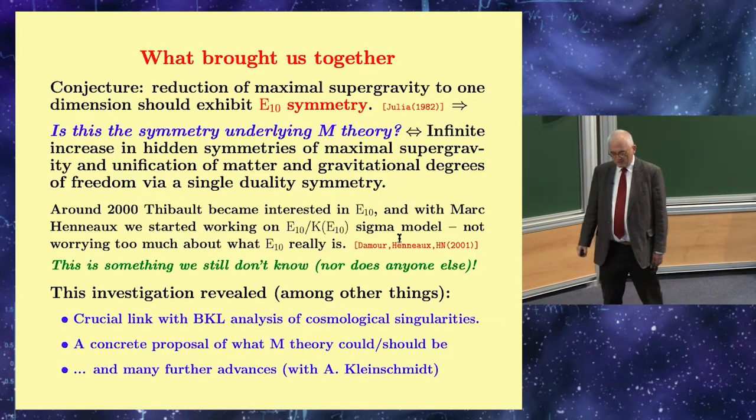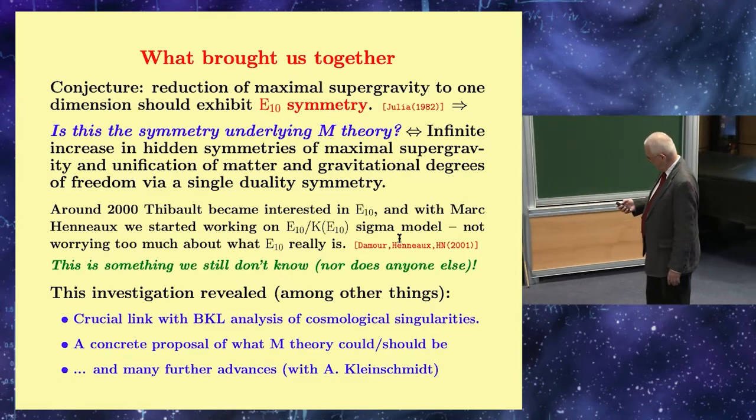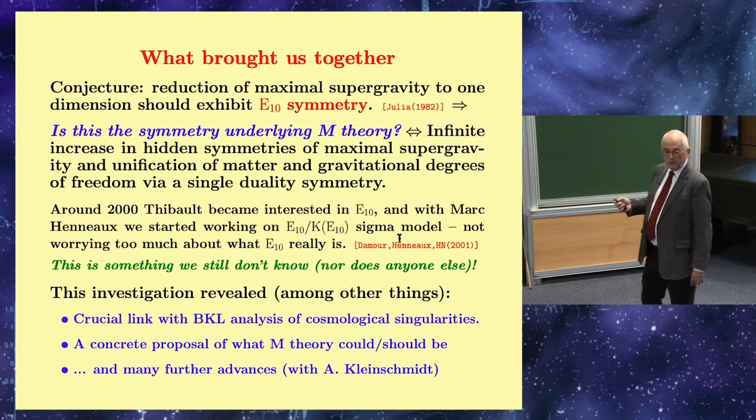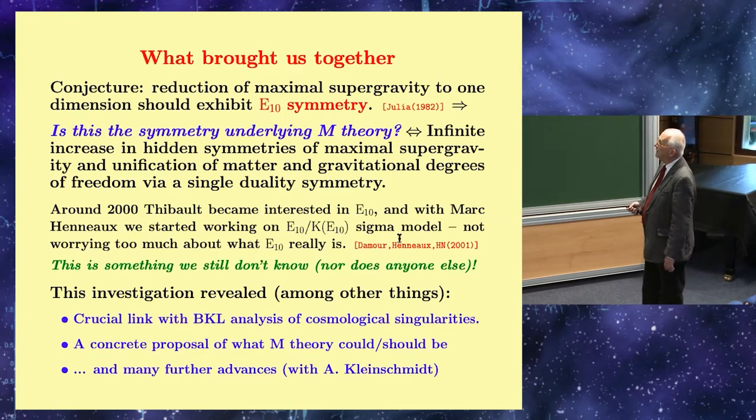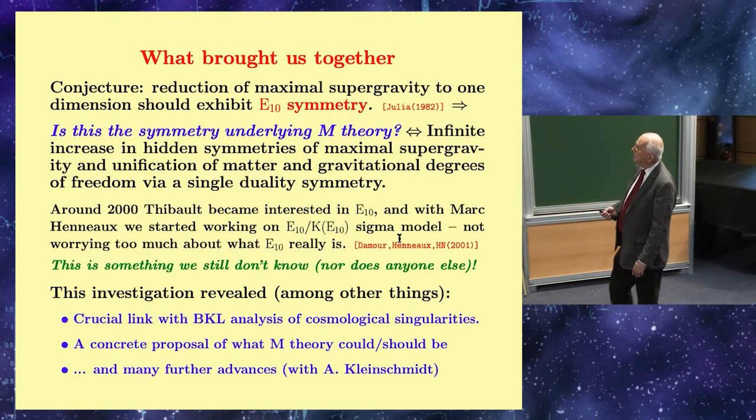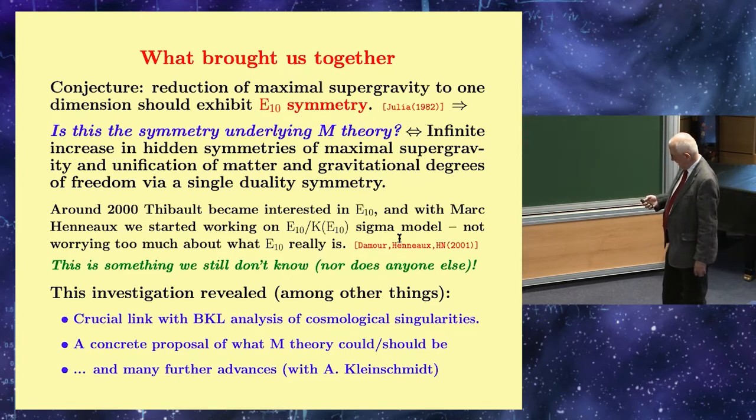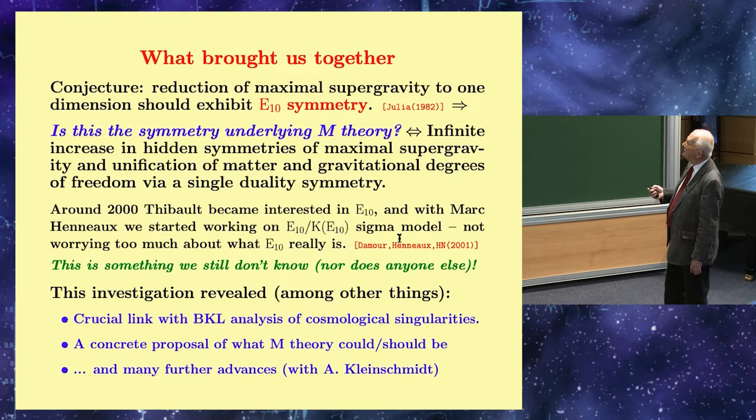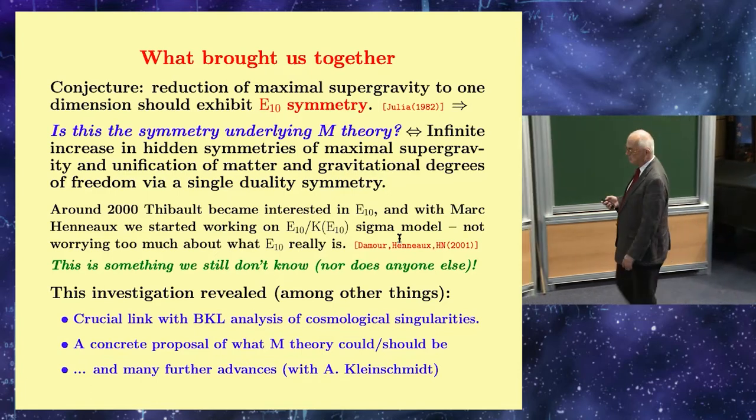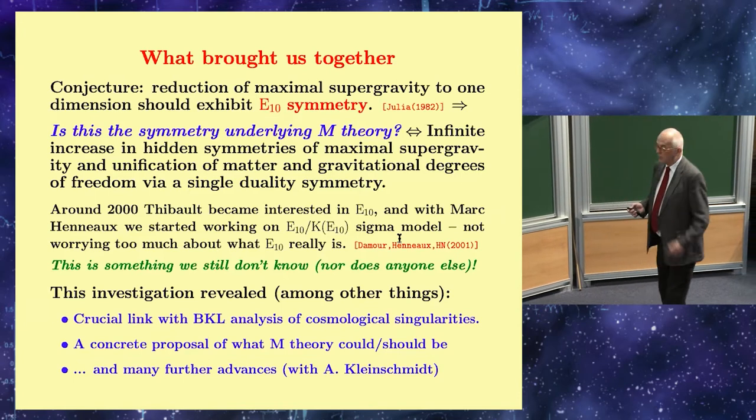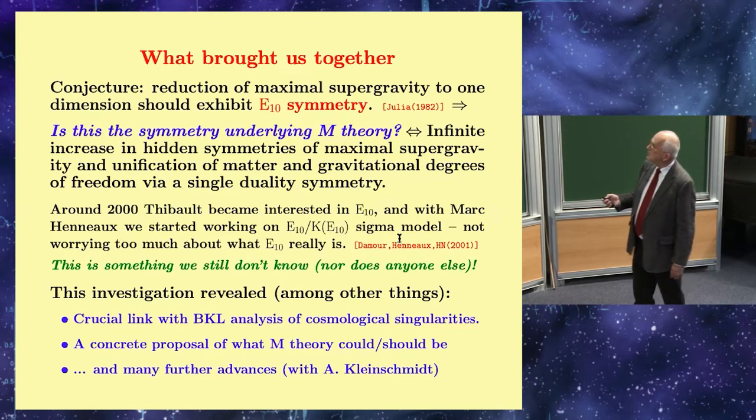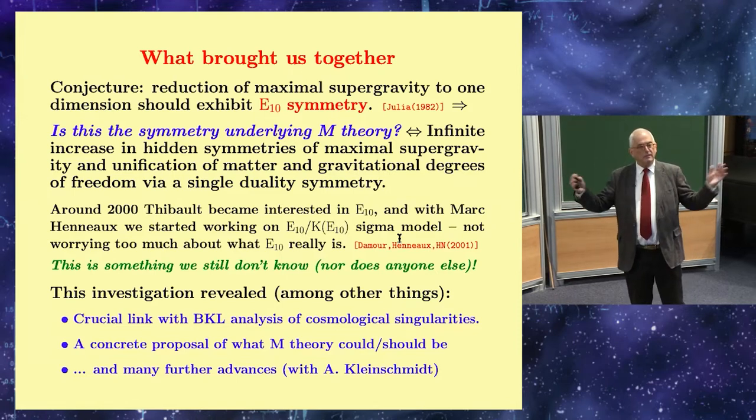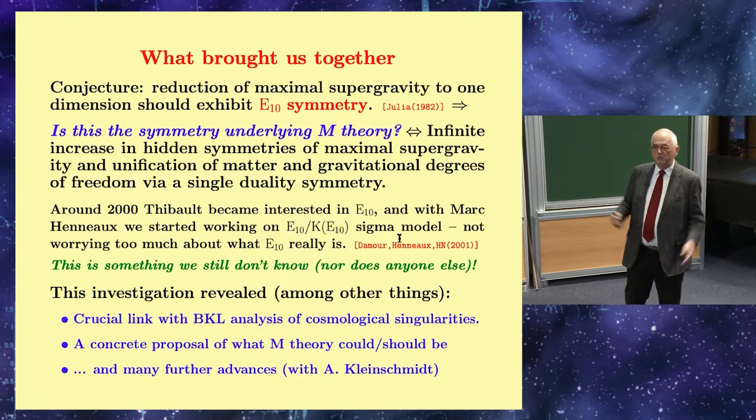So first I want to tell you what brought us together, and what brought us together is actually a stunning insight by our chairman Bernard Julia, who had this conjecture in connection with maximal supergravity. They discovered the emergence of exceptional symmetries in supergravity, and then he had this daring conjecture, almost 40 years ago, that there would emerge something called E10 symmetry in the reduction of this theory to one dimension.